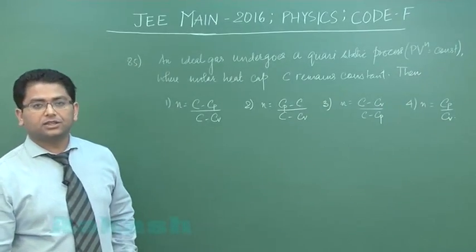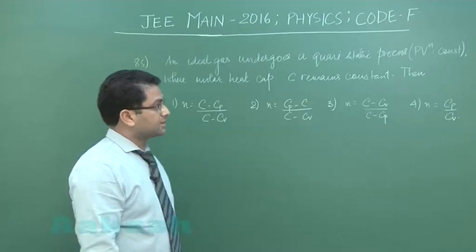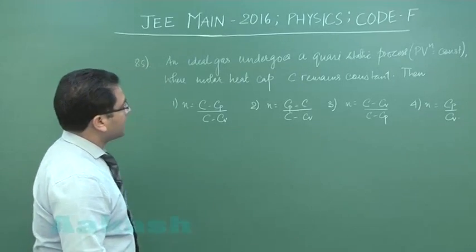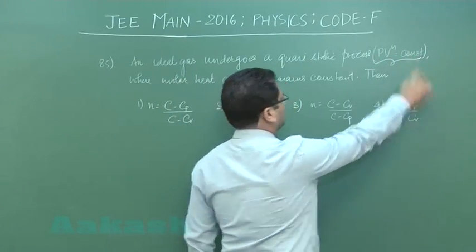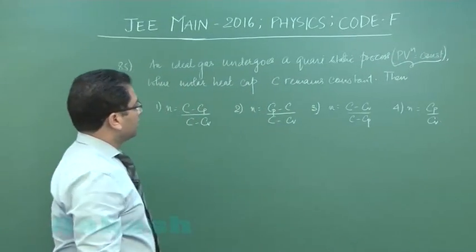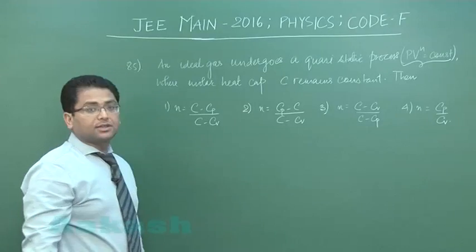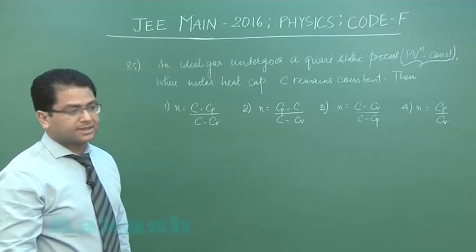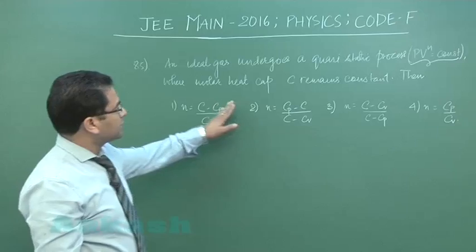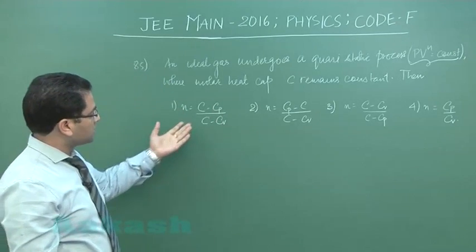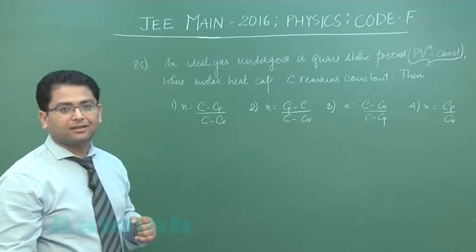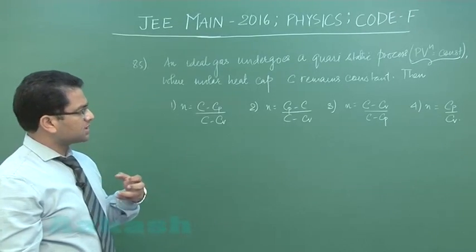Question number 85, another question from thermodynamics. It says an ideal gas undergoes a quasi-static process. This particular process is many times also called a polytropic process where molar heat capacity C remains constant.